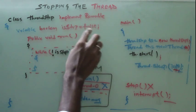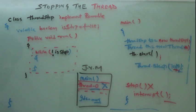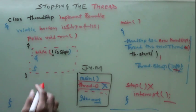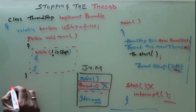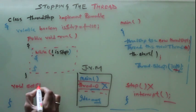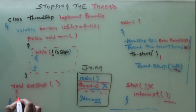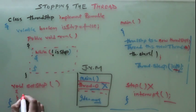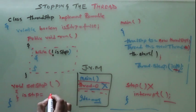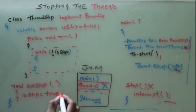So who will change this flag from isStop to true? The main thread. So we should have one more method. Public void setStop. In this what we will do, we will make isStop is equal to true.